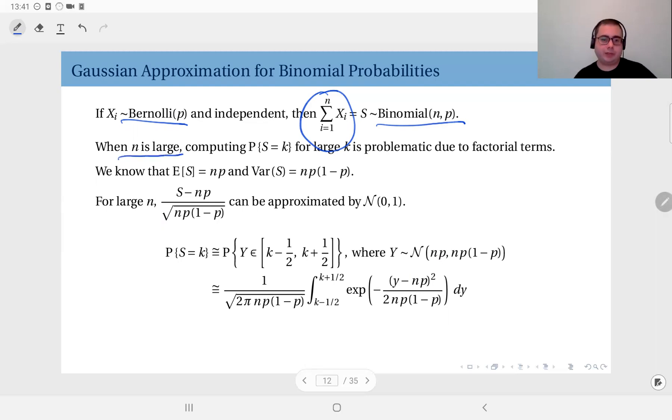And we know that the mean of the binomial is n times p and the variance is n times p times one minus p.